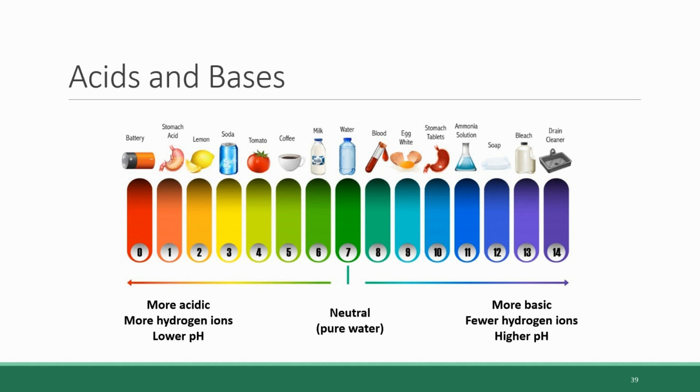Anything below 7 is an acid, and the lower the number, the more hydrogen ions and the stronger the acid. Battery acid is a very strong acid with a pH around zero. Just a little higher we have stomach acid at 1, lemons, soda, tomatoes, coffee. Milk is just slightly acidic. Anything above 7 is basic—there are fewer and fewer hydrogen ions and the base becomes stronger. Some mildly basic substances in nature are human blood and egg whites. Farther up the scale are really strong things like bleach or drain cleaner.